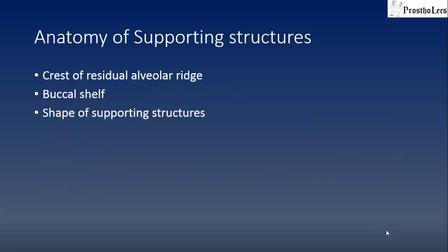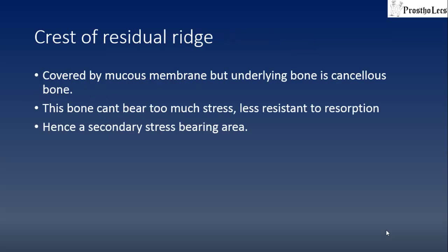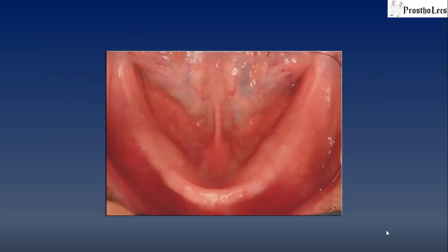The anatomy of supporting structures will be discussed under the following headings: crest of residual alveolar ridge, buccal shelf area, and shape of the supporting structures. The crest of the residual ridge is covered by mucous membrane, but the underlying bone is cancellous bone. Cancellous bone cannot bear too much stress and is hence less resistant to absorption. Therefore, this becomes a secondary stress-bearing area.